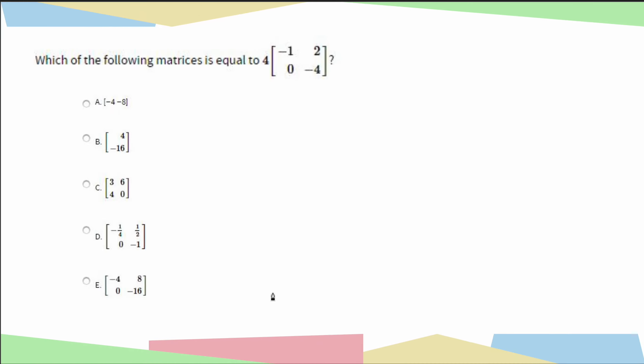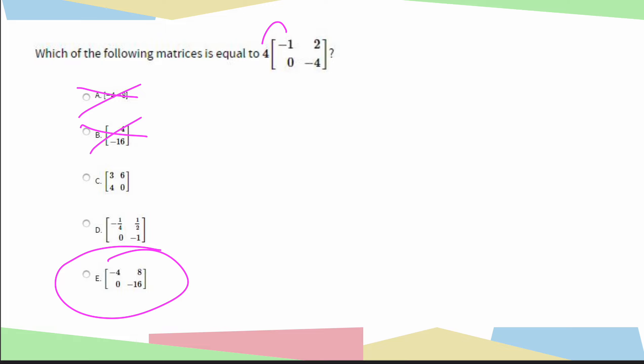All right, we have another scalar multiplication question. I'm going to do the same quick process of elimination. I know I'm looking for a 2 by 2 matrix, so I'm going to immediately eliminate A and B. Now I'm going to take 4, and I'm going to multiply it in. 4 times negative 1 is negative 4, and I immediately know that my answer choice is E.